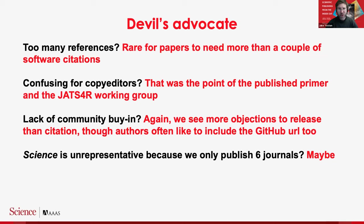We're fortunate that in our author base we see much higher adoption of GitHub than GitLab. Some authors who use GitLab find this aspect a little more challenging. Is Science unrepresentative because we only publish six journals — maybe we're a little more hands-on? What I would say is that we had really substantial broad representation of all the big publishers on both Dan's task force and Melissa's, and we discussed a lot of thorny process concerns. My takeaway is that we are on very strong footing to make software citation an integral part of the publishing landscape.